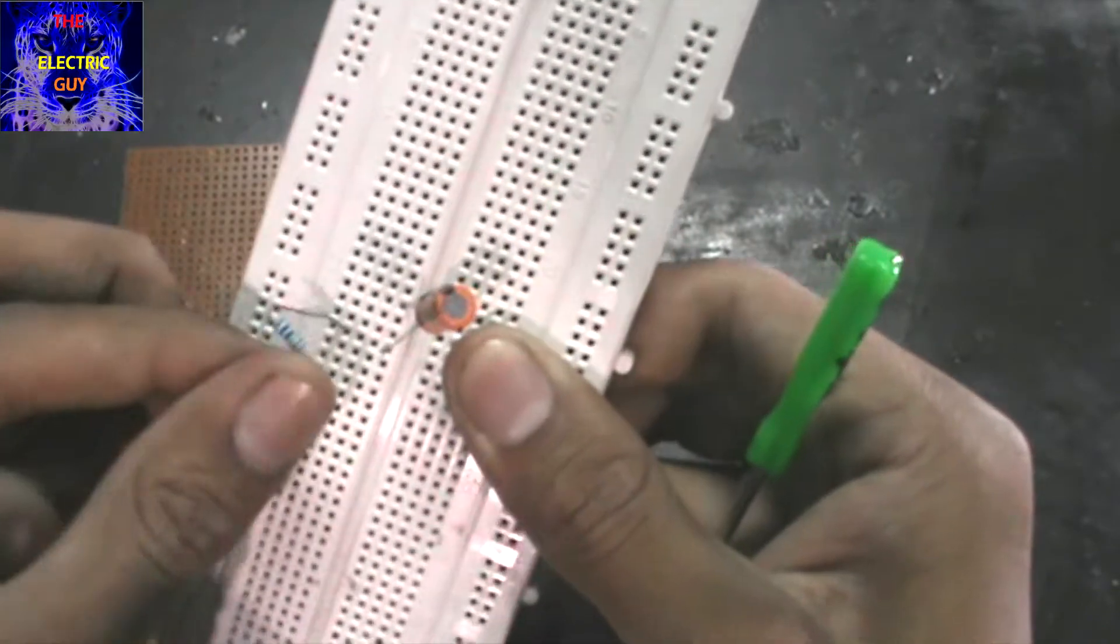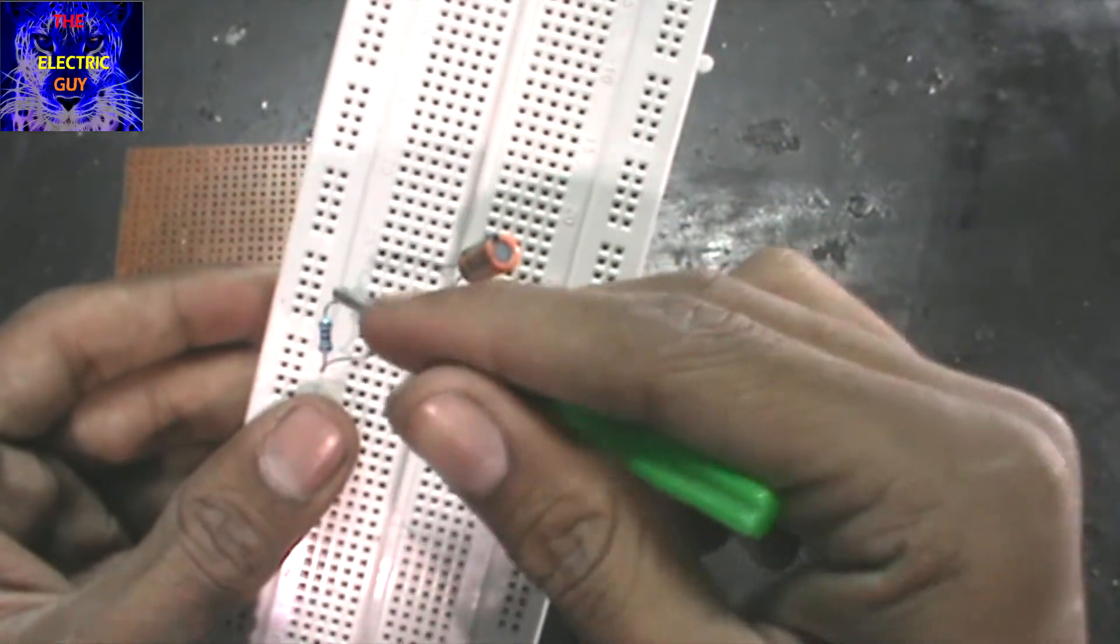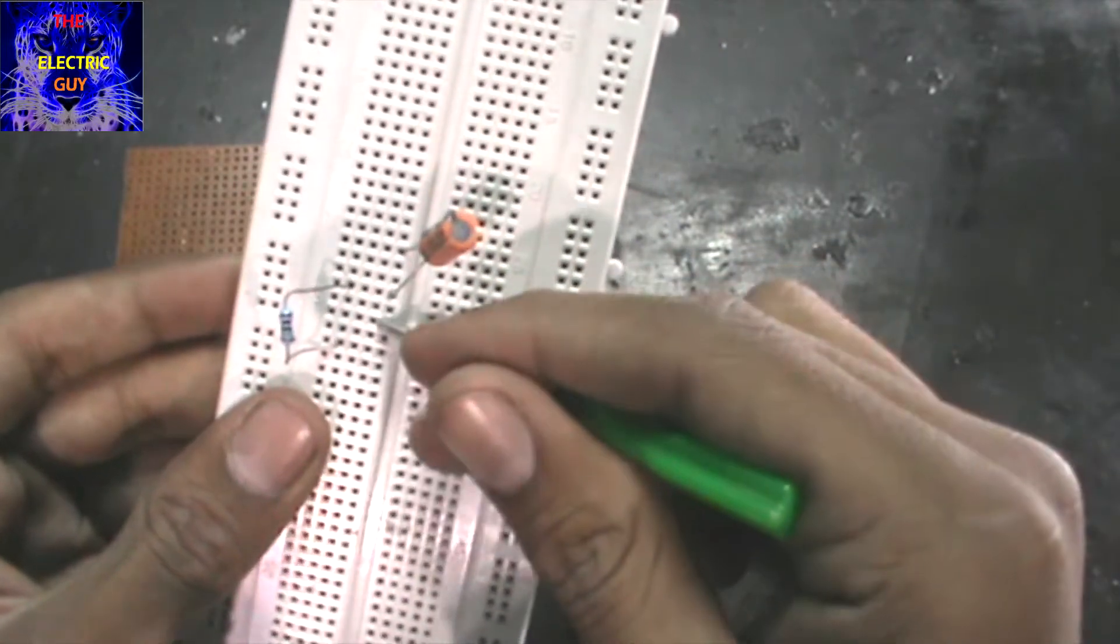And now, the connection with the capacitor to the resistor is done in this rail.